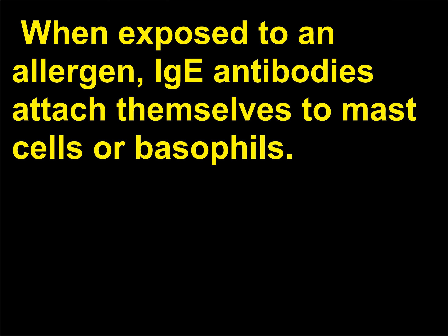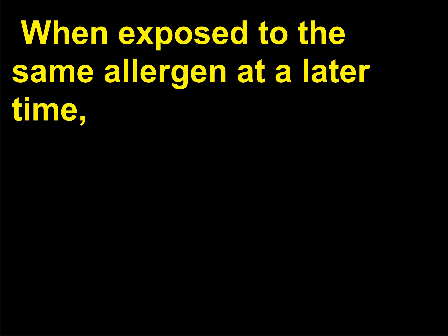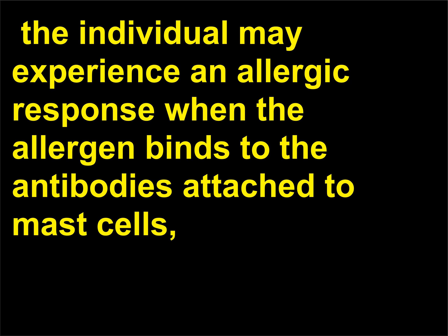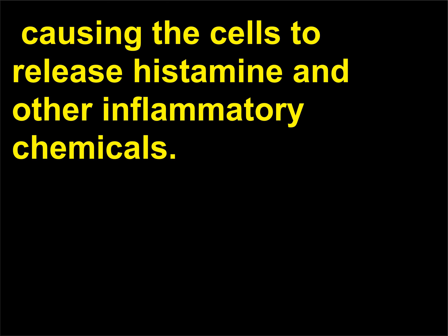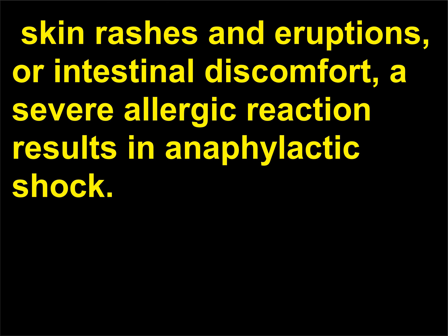When exposed to an allergen, IgE antibodies attach themselves to mast cells or basophils. Mast cells are normal body cells that produce histamines and other chemicals. When exposed to the same allergen at a later time, the individual may experience an allergic response when the allergen binds to the antibodies attached to mast cells, causing the cells to release histamine and other inflammatory chemicals. While most allergic reactions are expressed as a runny nose, difficulty in breathing, skin rashes, or intestinal discomfort, a severe allergic reaction results in anaphylactic shock.